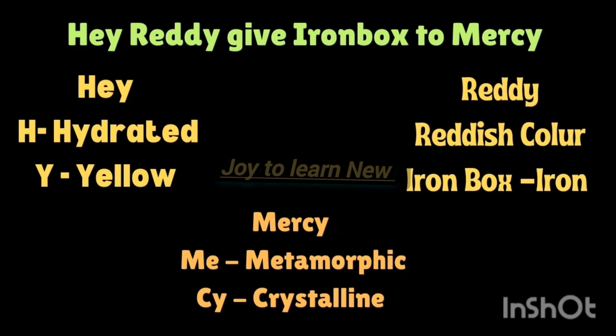Now look at the word 'Reddy' — R-E-D represents reddish color. 'Iron box' — iron represents diffusion of iron, which causes the red color. This diffusion of iron occurs particularly in metamorphic and crystalline rocks. 'Mercy' — M-E represents metamorphic, C-Y represents crystalline. So the soil develops a reddish color due to diffusion of iron, particularly on metamorphic and crystalline rocks, and looks yellow in color when in hydrated form.